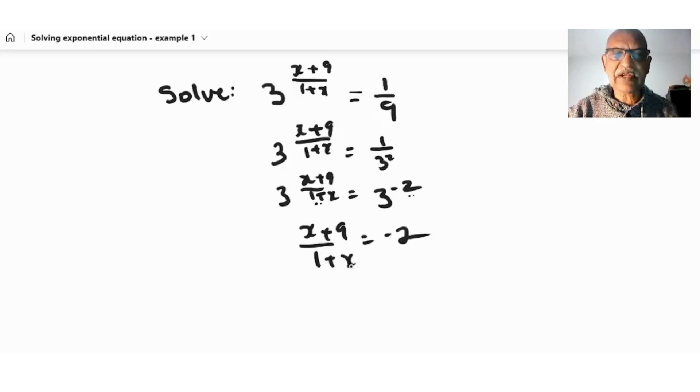Then we have a condition that x cannot be equal to negative 1. So x plus 9 equals negative 2 times 1 plus x. So we have x plus 9 equals negative 2 minus 2x.